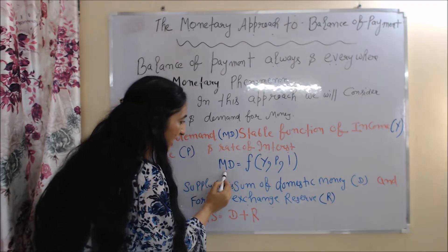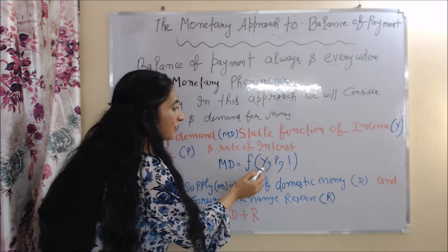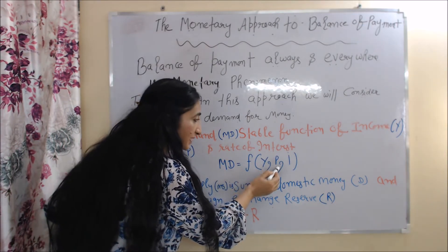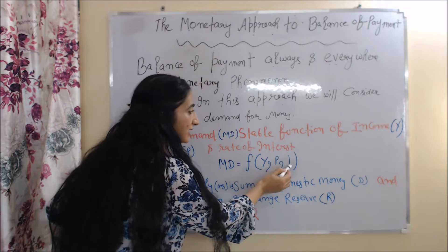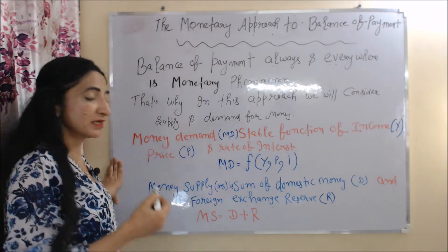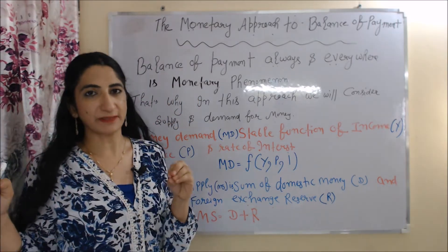In this equation, MD is demand for money, Y is income, P is price, and I is rate of interest. Now we will talk about money supply.